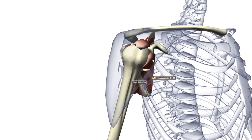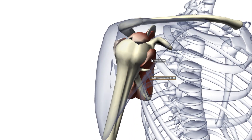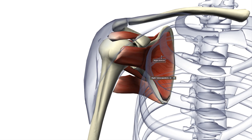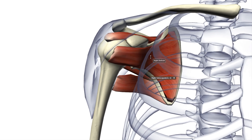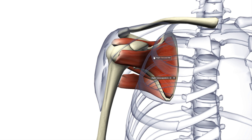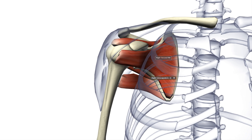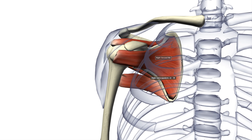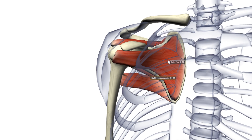It is called the subscapularis because it originates from the subscapular fossa, and the insertion of this muscle is not on the greater tubercle but on the lesser tubercle of the humerus. It serves to medially rotate the arm and also to stabilize the shoulder. It is innervated by the upper subscapular nerve and the lower subscapular nerve, C5 and C6.